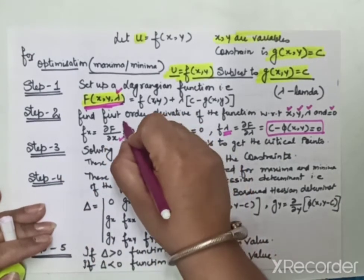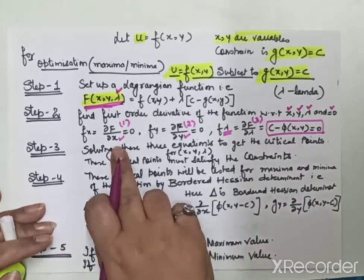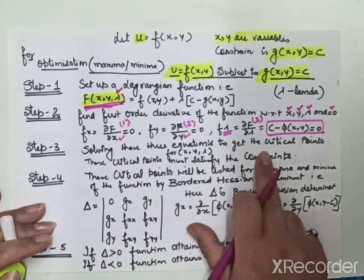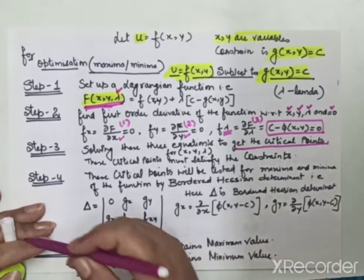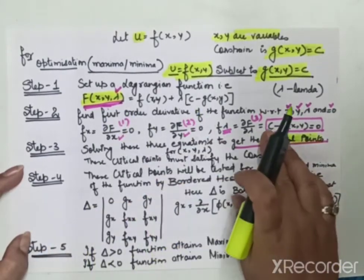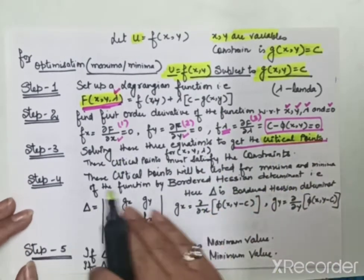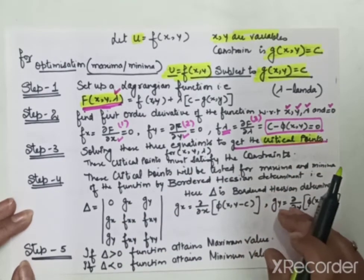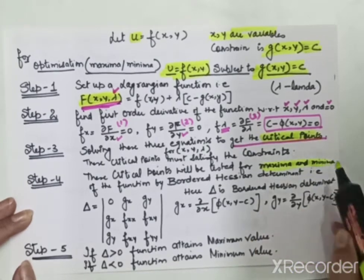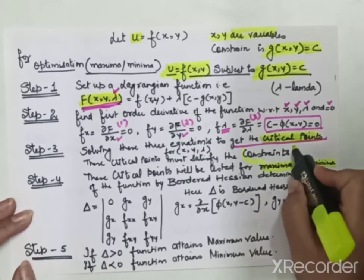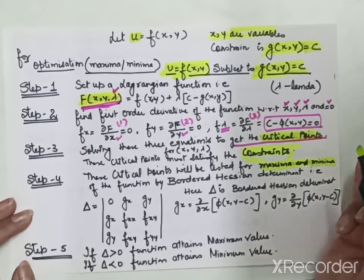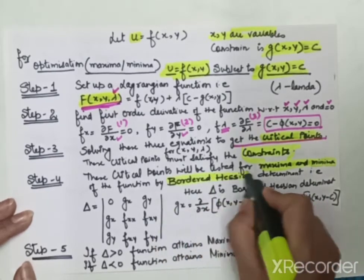After step 2, we have three equations. In step 3, we solve these three equations simultaneously to get the critical points. After solving, in step 4, we test those critical points for maxima or minima. We need to determine whether the solutions give us a maximum or minimum value, and for this we arrange a bordered Hessian determinant.